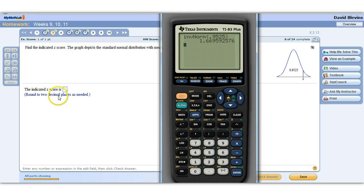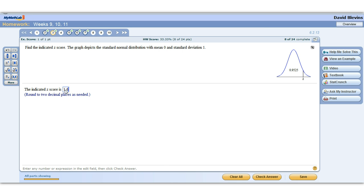It wants it to two decimal places. So there's the second decimal place. The next number is a 9, so we're going to round it up to 1.67. So that's how you use the inverse normal feature if you're given an area to the left and need the z-score.